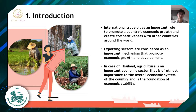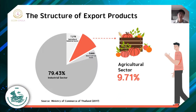Introduction. International trade plays important roles in promoting economic growth and creating competitiveness with other countries around the world, especially in exporting sectors. In the case of Thailand, agriculture is an important economic sector that underpins the overall economic system and is the foundation of economic stability. Since Thailand is an agriculture country, agriculture has been the main occupation of Thai society for a long time. When considering the structure of export products, it was found that the agriculture sector accounts for the second highest proportion, following the industrial sector.